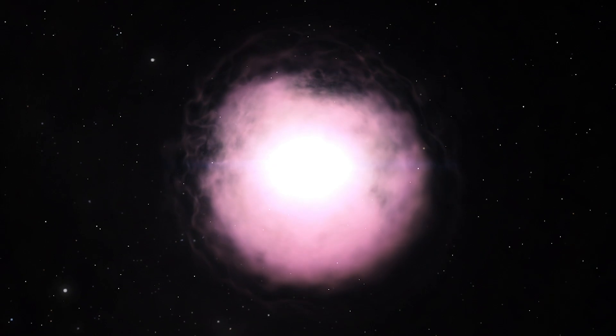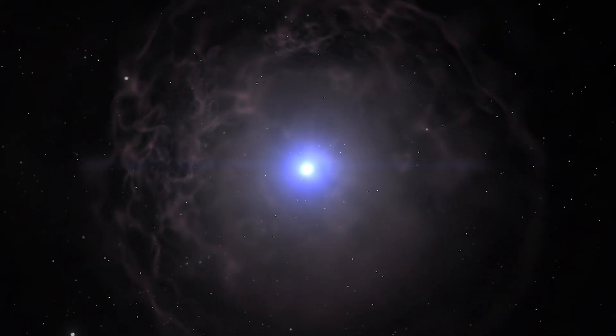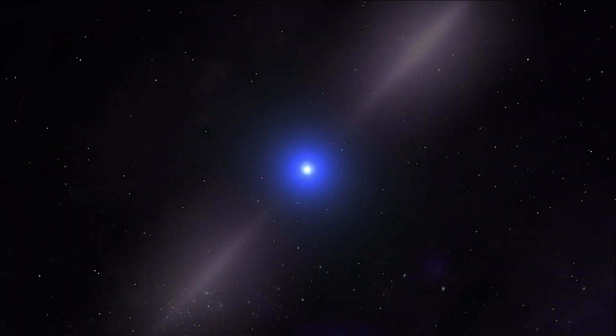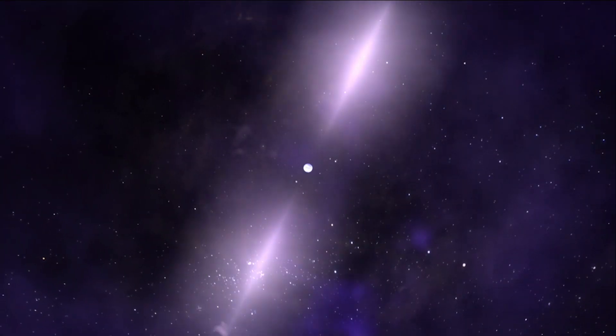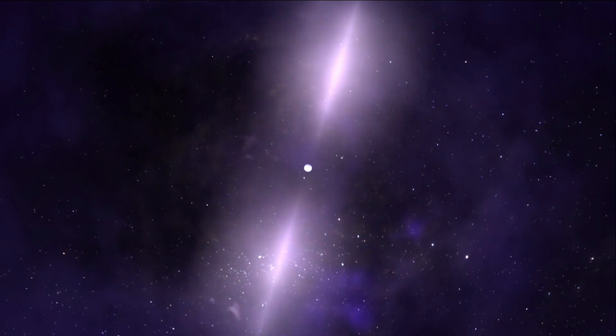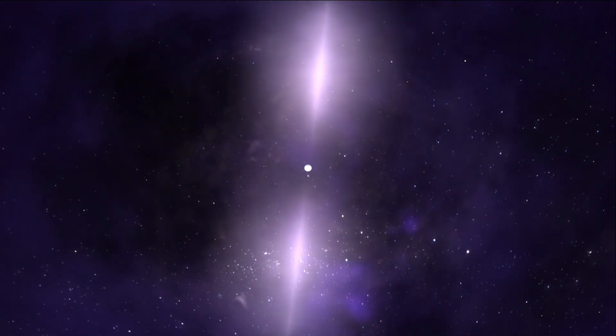A neutron star is the crushed core of a massive star that exploded in a supernova. Pulsars, like J0030, are rapidly spinning neutron stars that sweep beams of energy across our line of sight, much like a lighthouse.